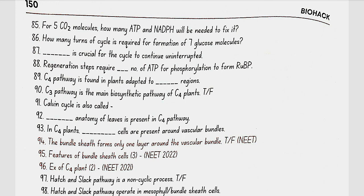The C4 pathway is found in plants adapted to dry tropical regions. The Calvin cycle (C3 pathway) is the main biosynthetic pathway of C4 plants. Kranz anatomy of leaves is present in C4 plants. Bundle sheath cells are present around vascular bundles, and they do not form only one layer — this is false.